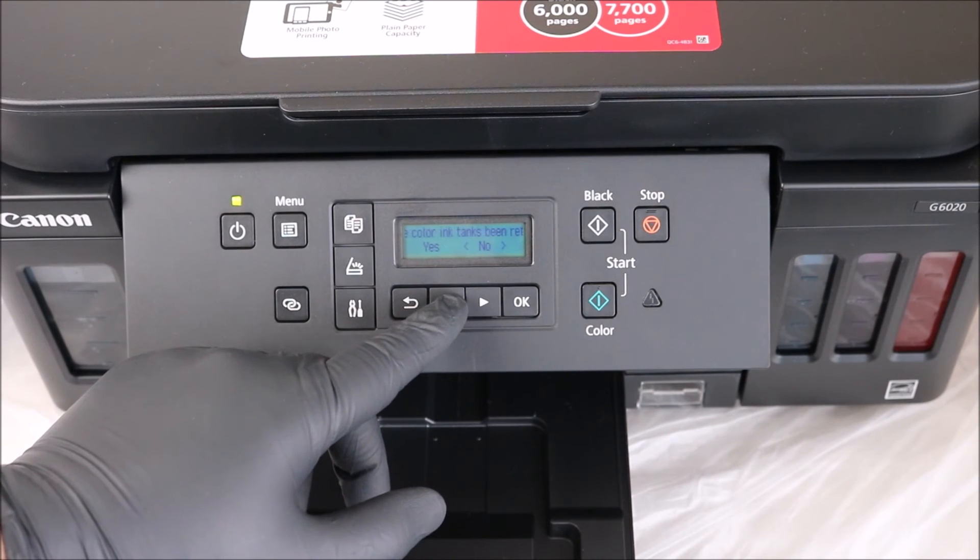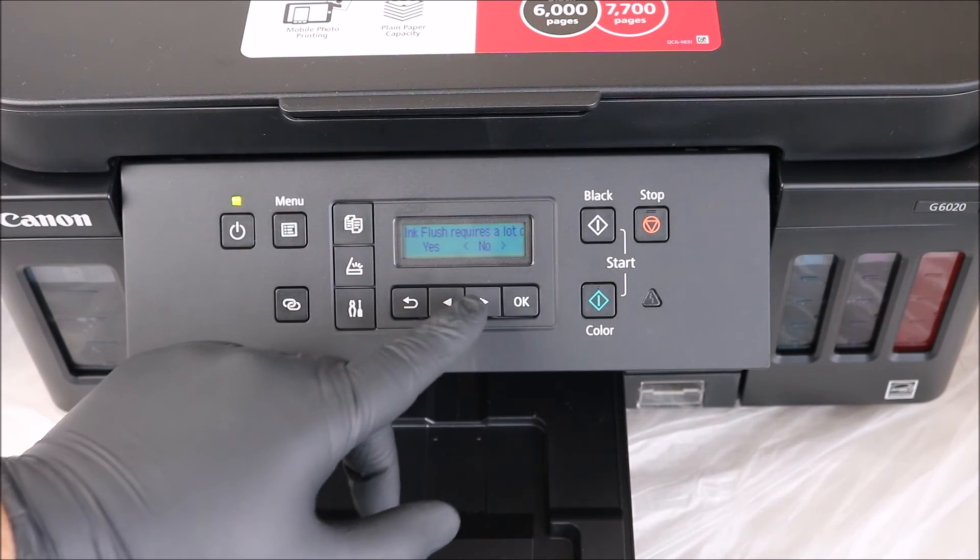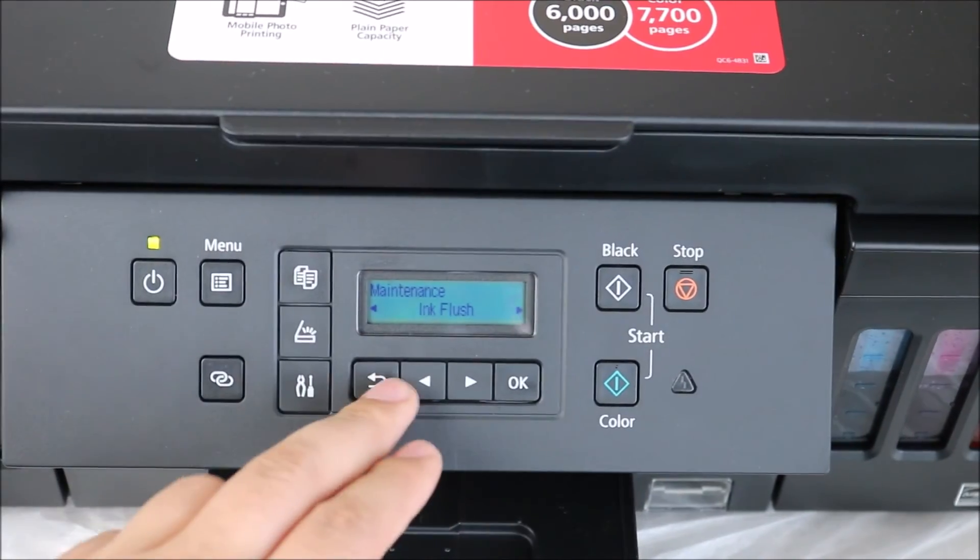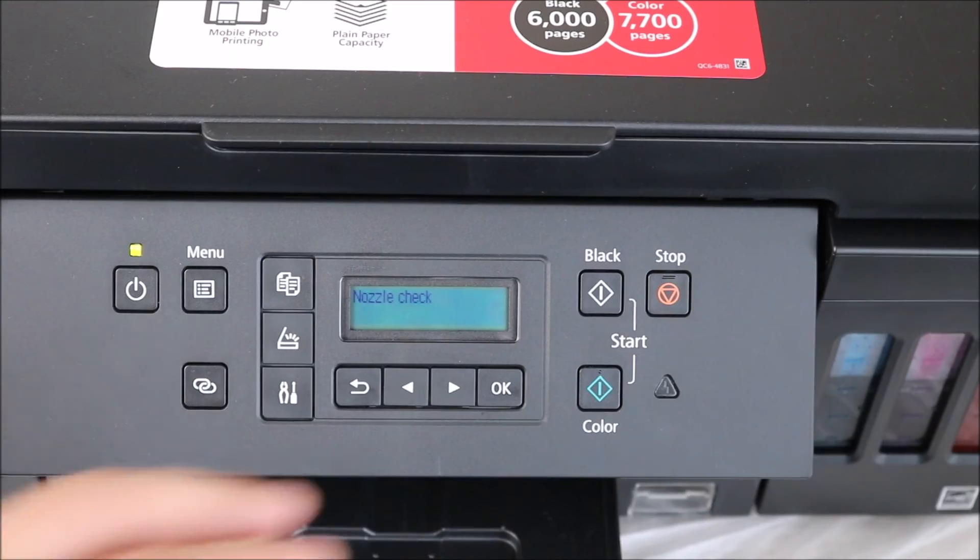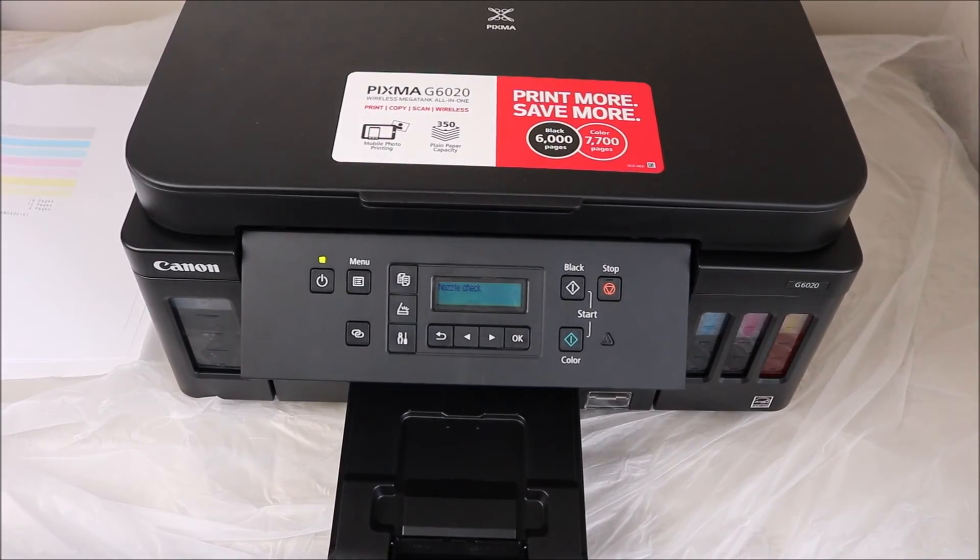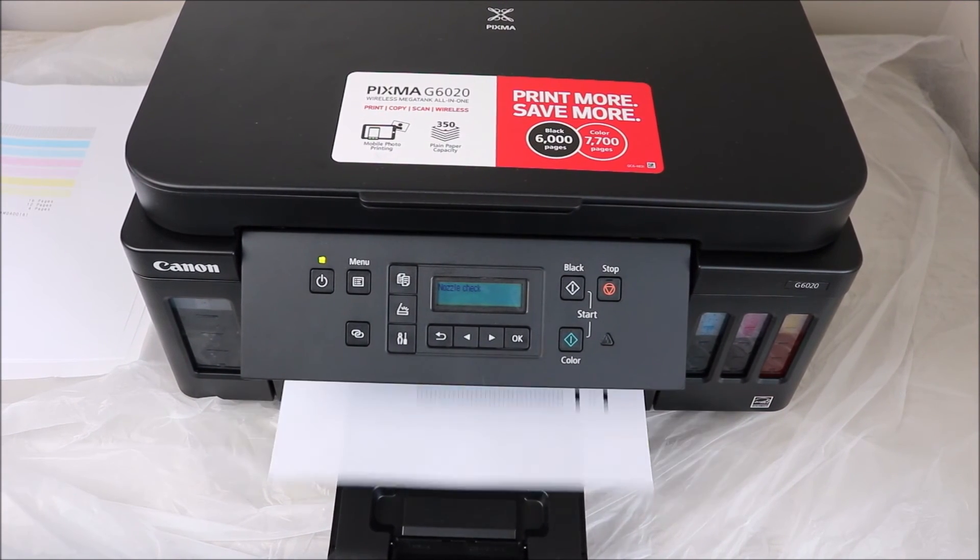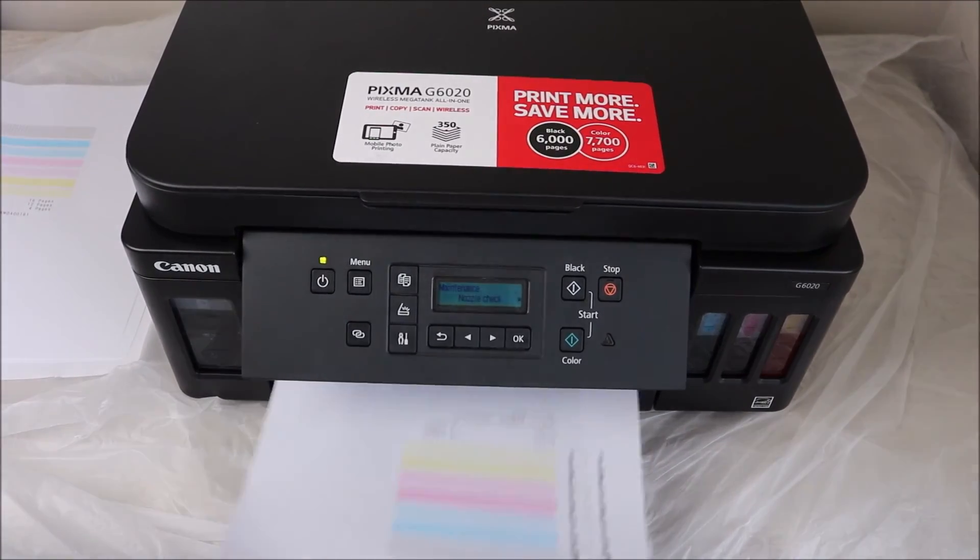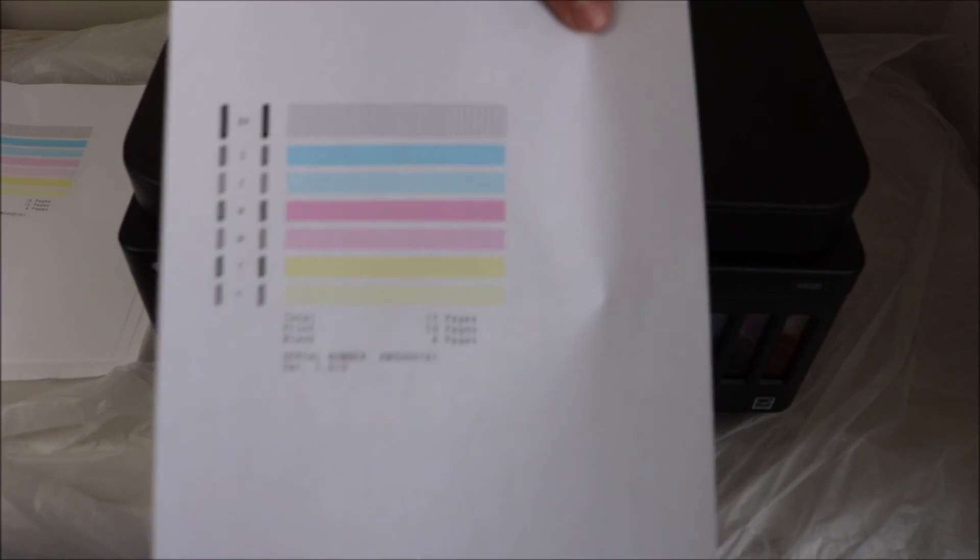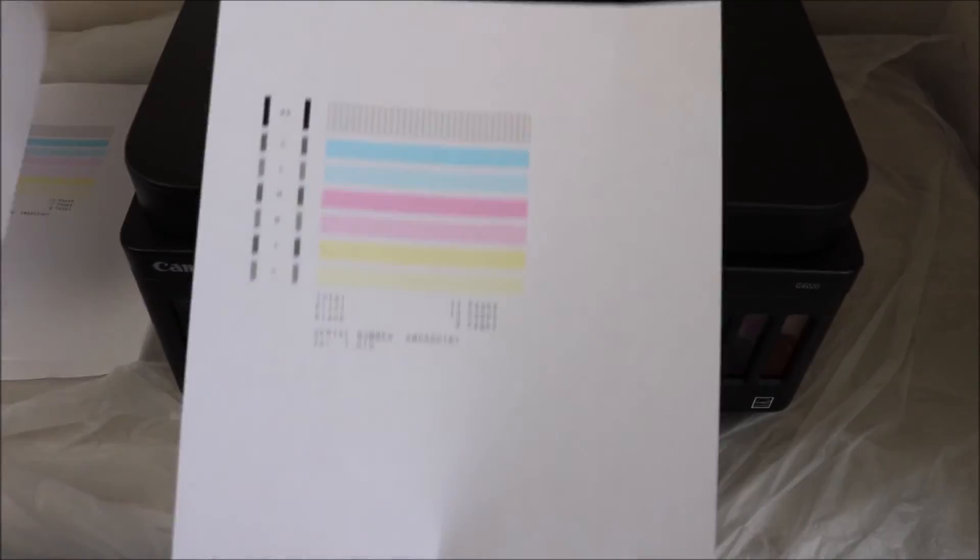So what you're going to do is you're going to go to maintenance, go to setup, it's the screwdriver and the plier symbol, click on that. You're then going to go to maintenance and you're going to want to go to ink flush. So at first we did a regular cleaning, and after we did the cleaning, we went right into actually clicking on ink flush, which is another one of the options for you.